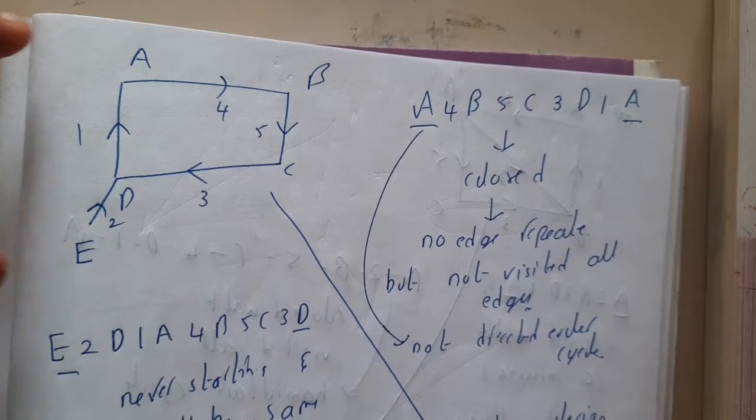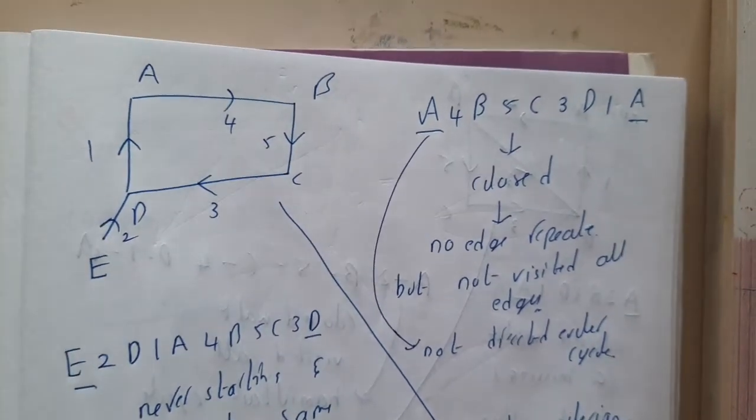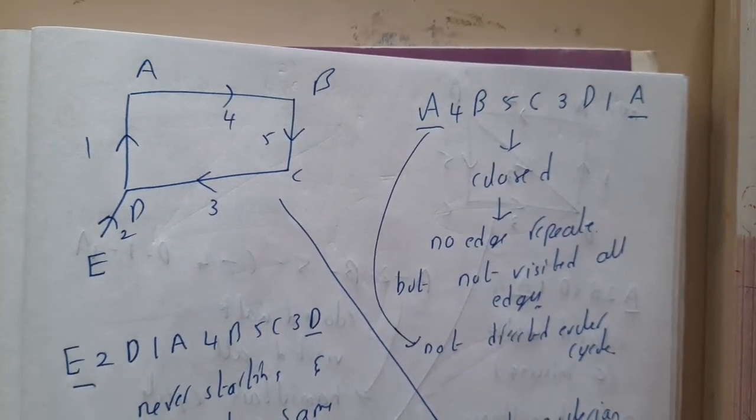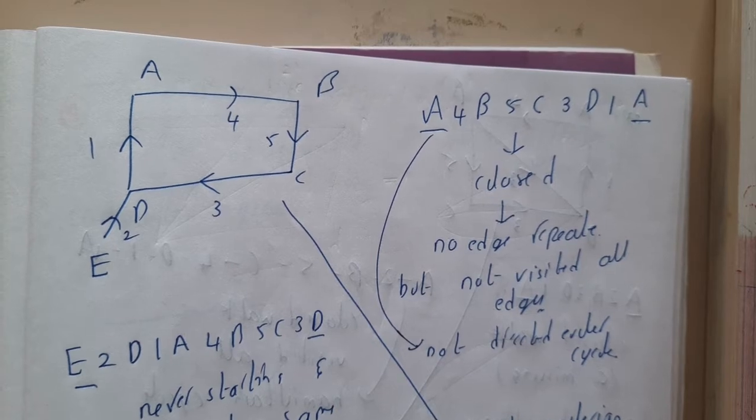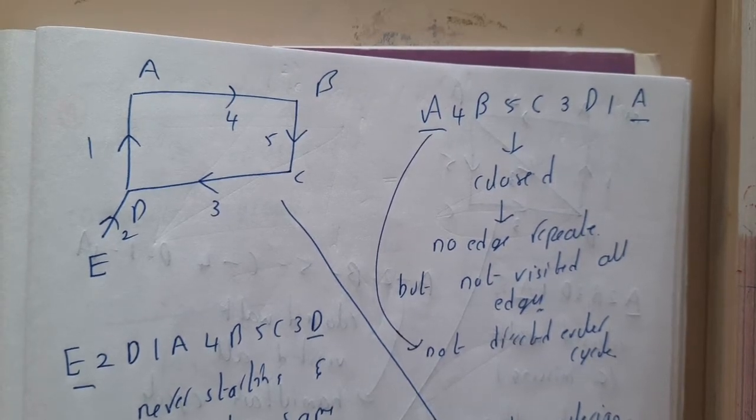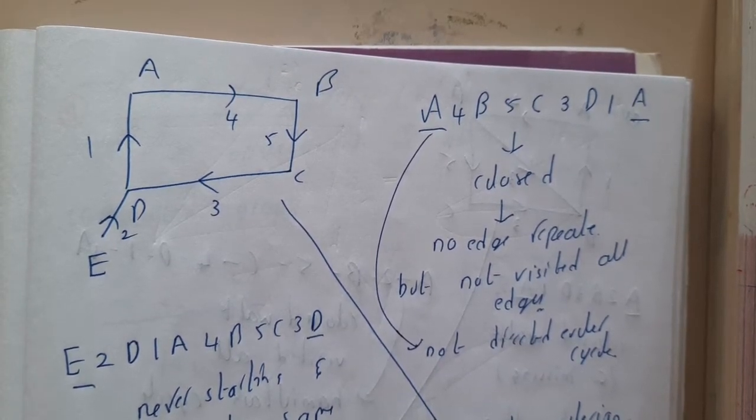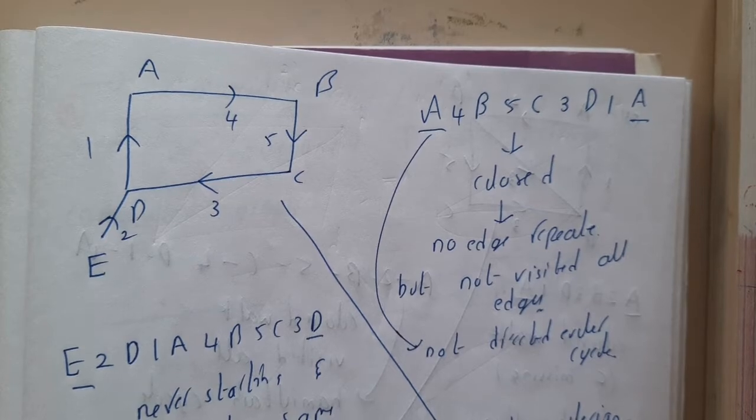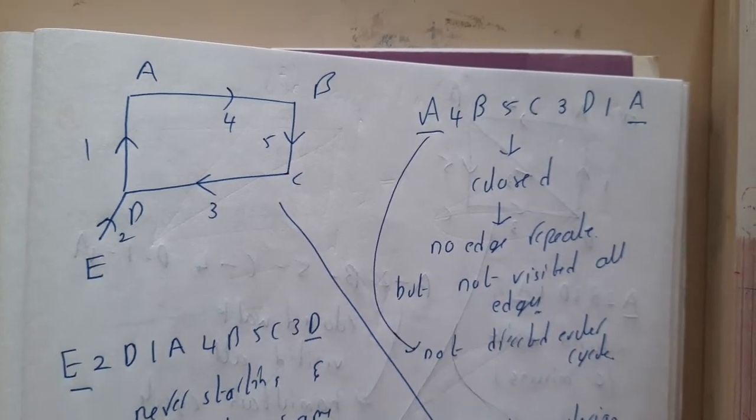I hope everyone got a clear idea. Let us continue with one more example. The thing that you should remember is you should start and end with the same vertex, guys. Only then it can become a Eulerian directed graph.